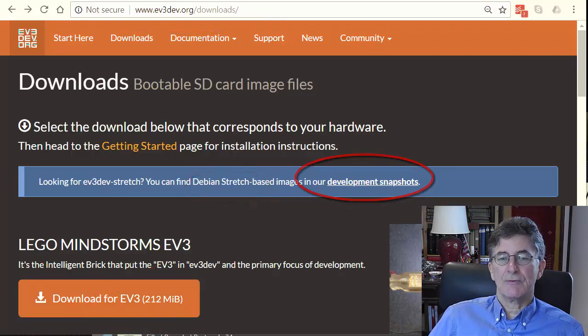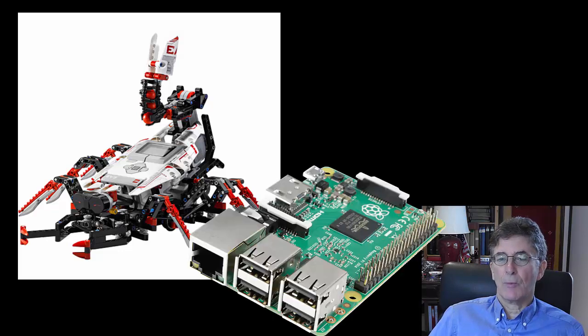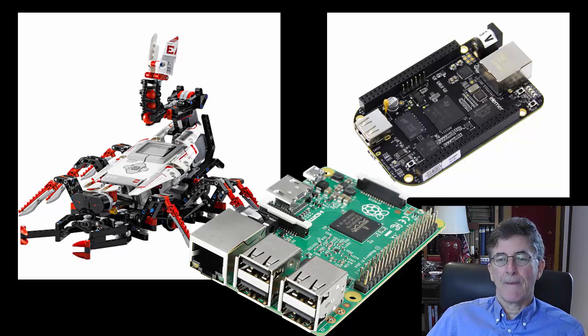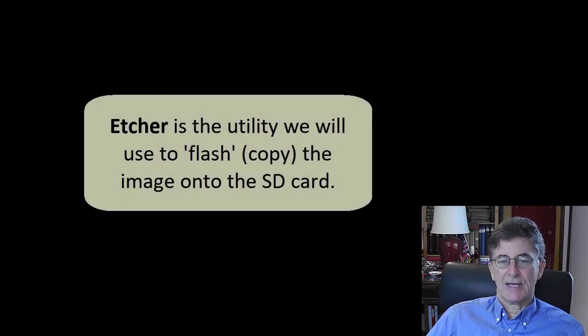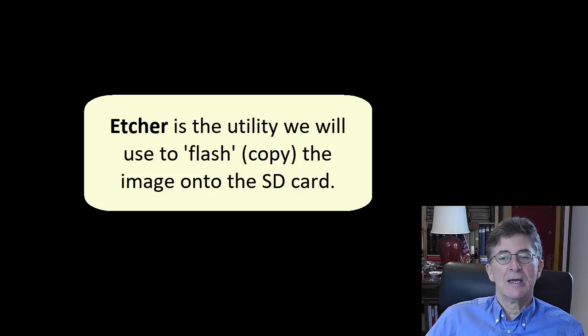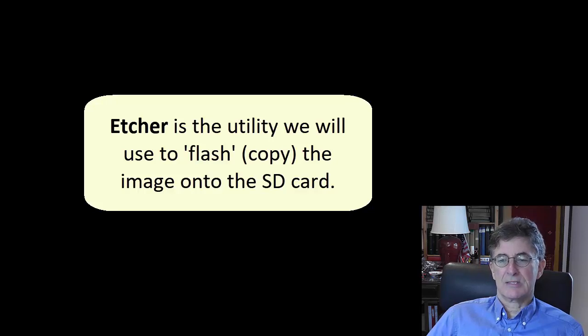Stretch versions are available for EV3, Raspberry Pi 1, Raspberry Pi 2, and BeagleBone, but only the EV3 is discussed in this video. The download is about 250MB and may take a couple of minutes. It would be a good idea to check every month or so whether a more recent image is available. Using Etcher to flash a newer image to the SD card is easier and faster than connecting your EV3 to the internet and updating the older operating system on the card.